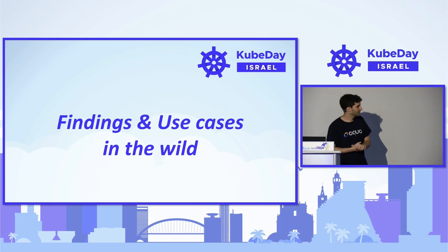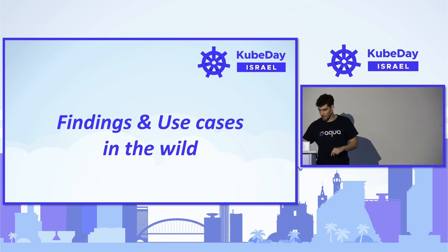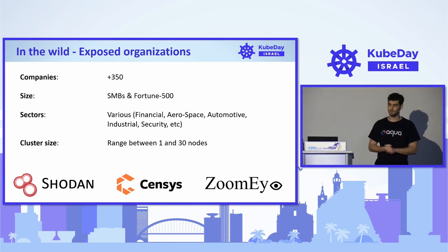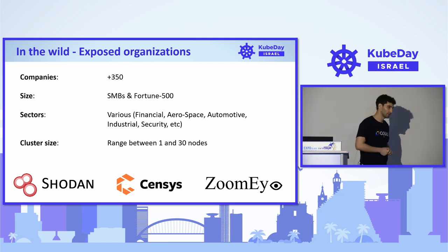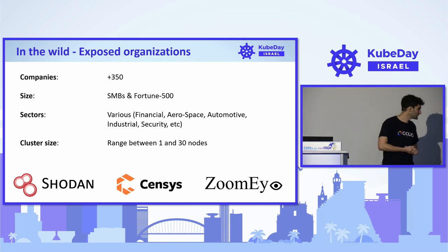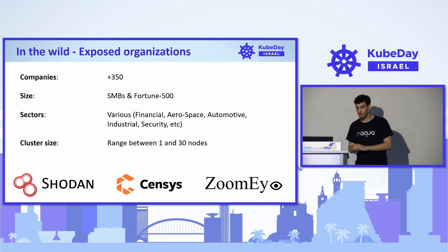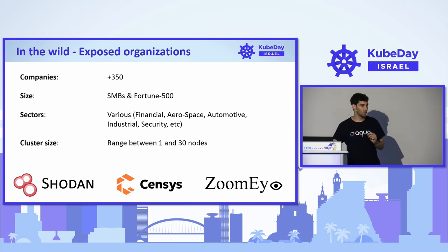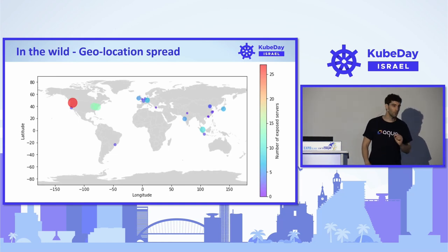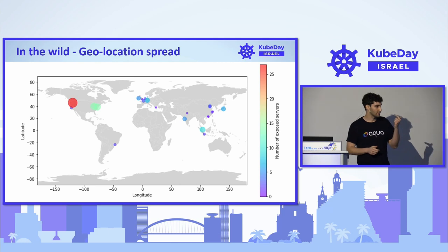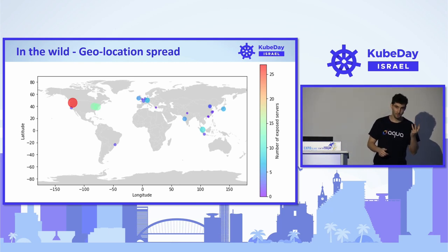Let's talk about findings from the wild. Starting from 1.1 million exposed Kubernetes clusters, we ended with around 350 impacted companies — small, medium, and Fortune 500 large — from sectors including financial, aerospace, car manufacturers, industrial, and security. Cluster sizes ranged between 1 and 30 nodes, from all around the world — America, Europe, Southeast Asia — and across all cloud providers: Amazon, Google, Microsoft, Alibaba Cloud, and Yandex.